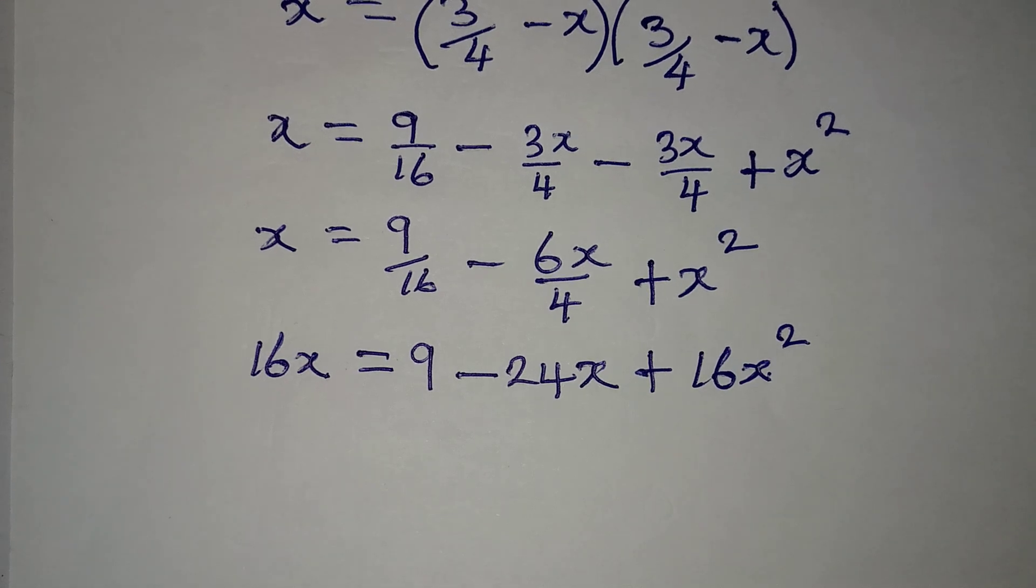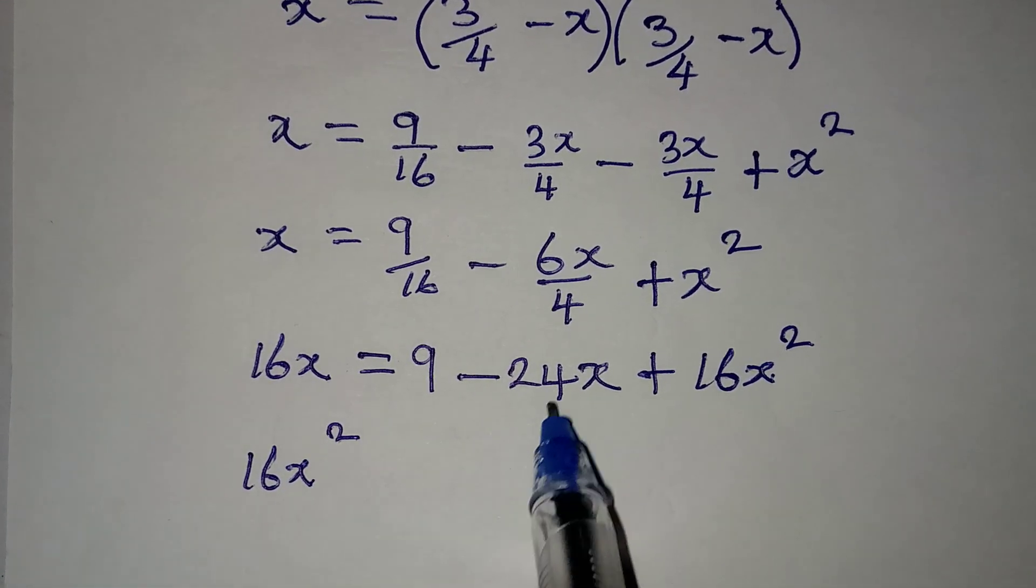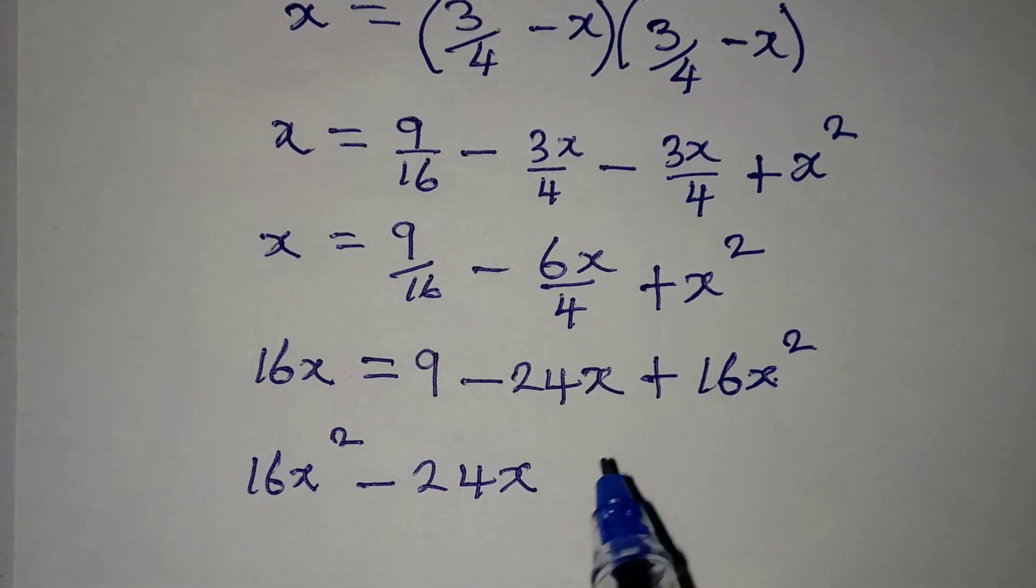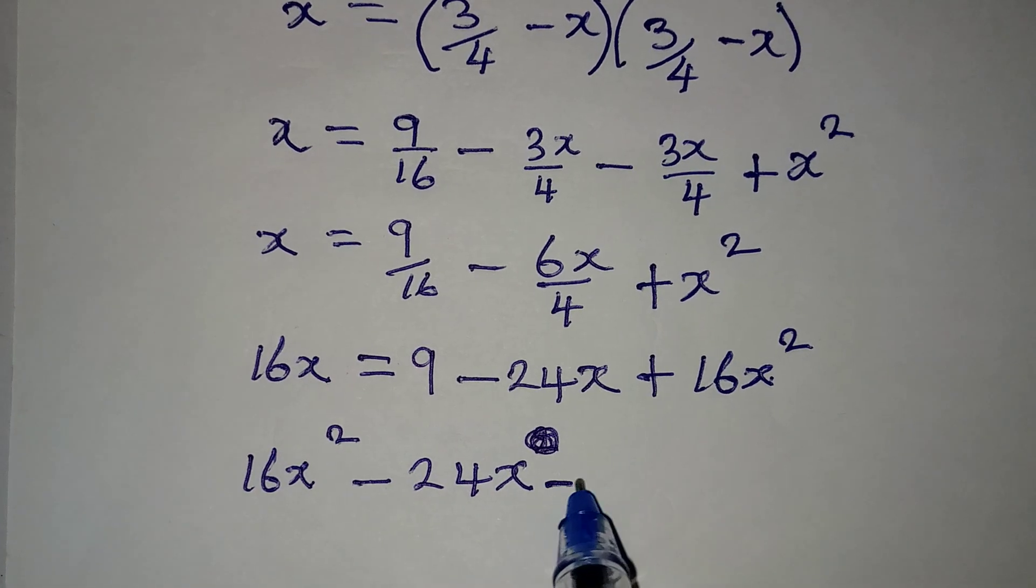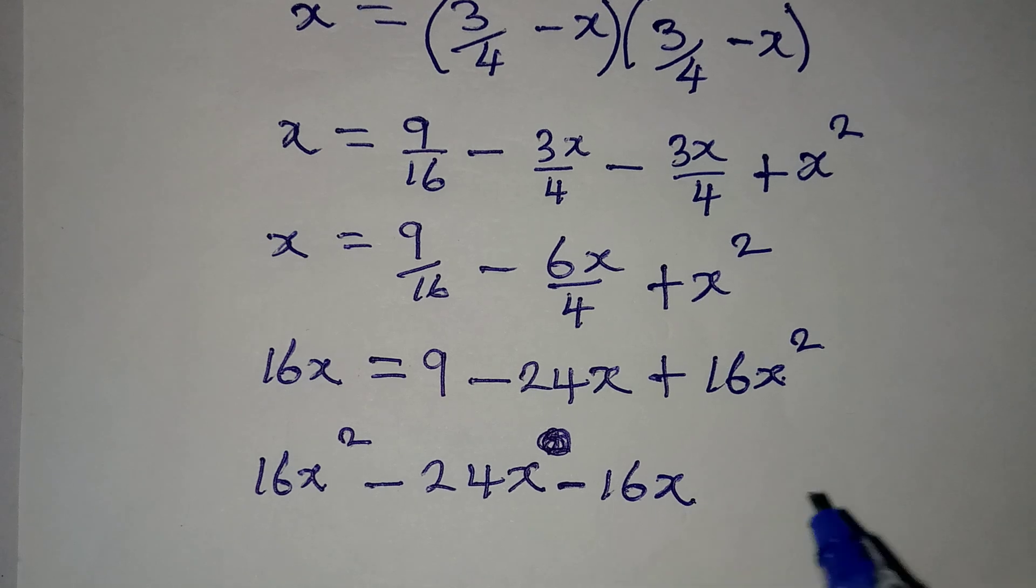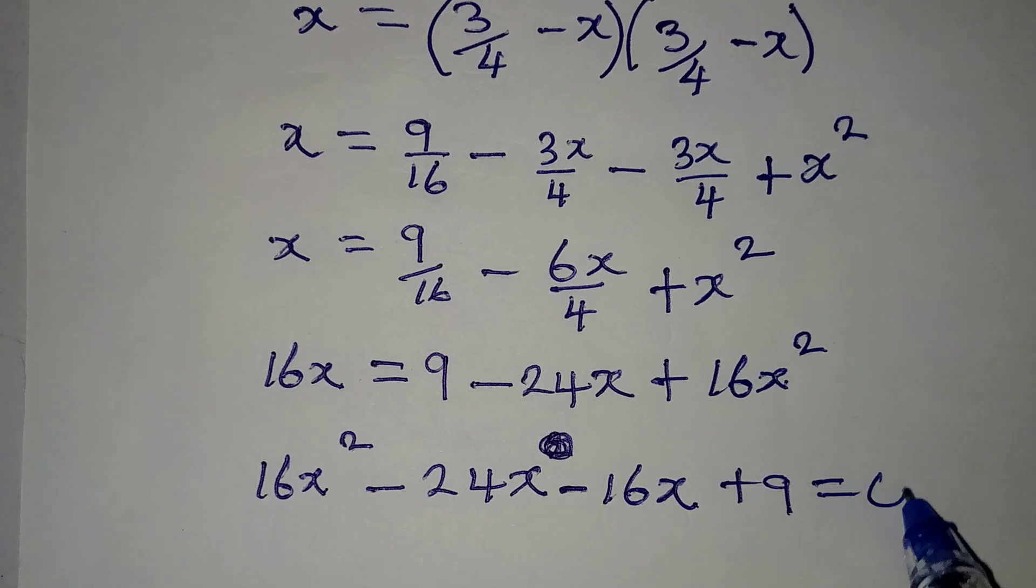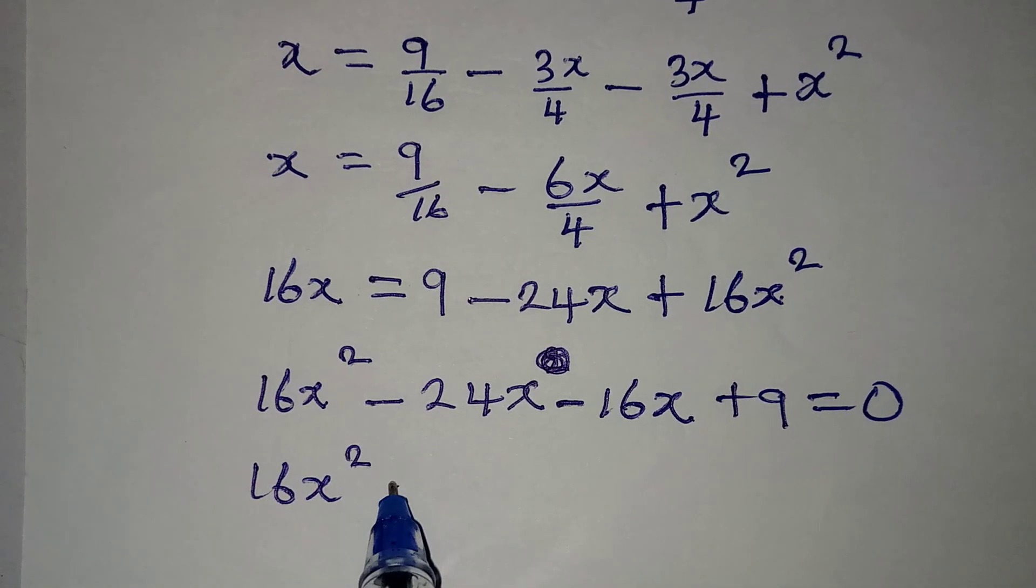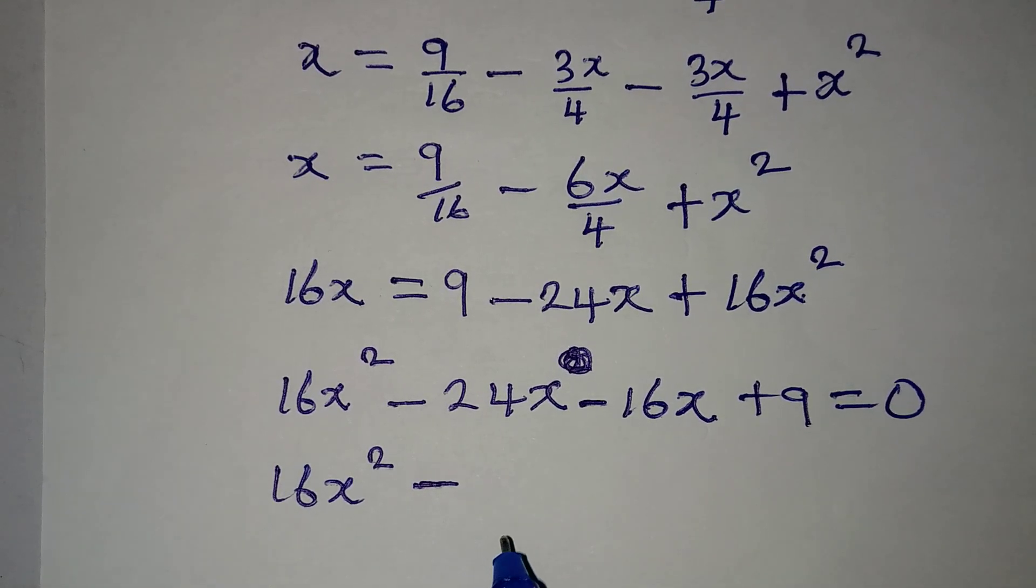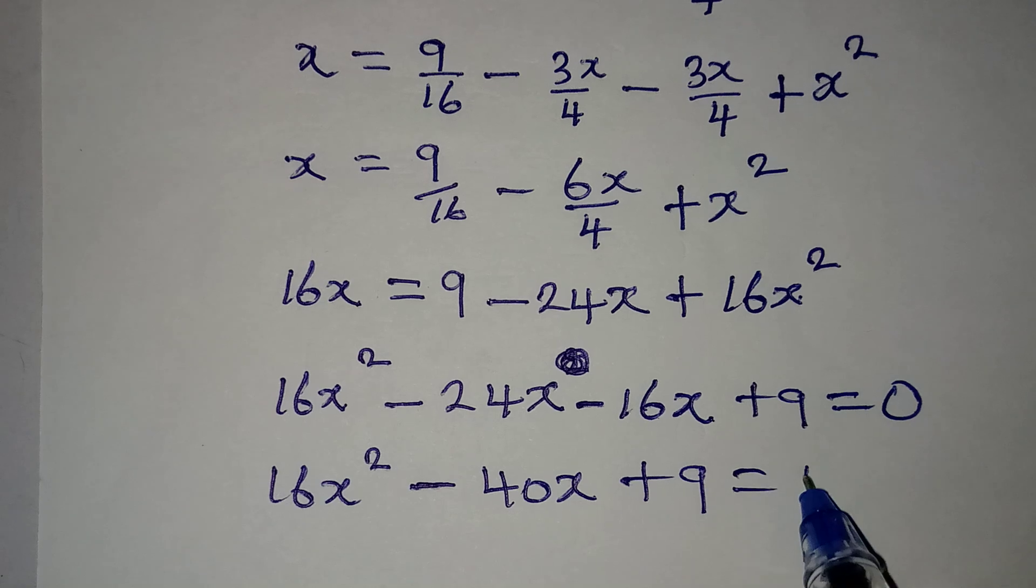Now, let's arrange this properly, so that we have 16x squared first, then this is minus 24x. This is positive 16x, it comes here to become negative 16x. And then what is left, I have 9, which is plus 9, and this will be equal to 0. Then let's continue, we have 16x squared, then minus, if you put this together, you will have 40x, then plus 9, this is equal to 0.